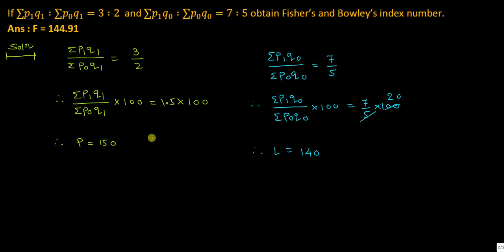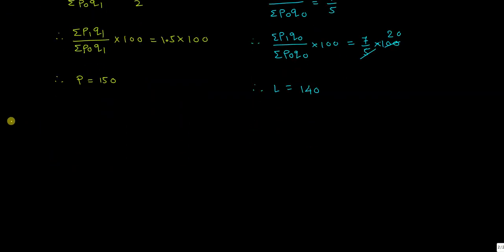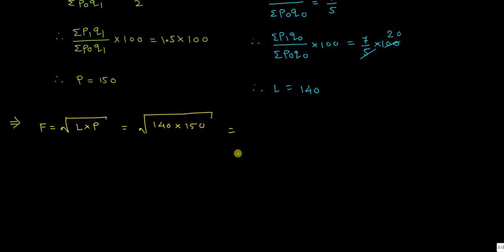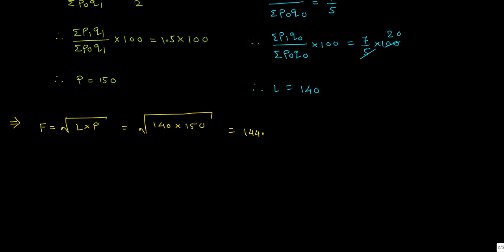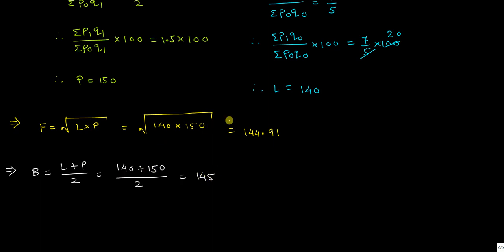Now find Fischer's and Bowley's index number. Fischer's index number equals under root of L multiplied by P, which equals under root of 140 into 150. That gives 21000, and the under root is 144.91. Bowley's index number B equals L plus P divided by 2, so 140 plus 150 divided by 2 equals 145.